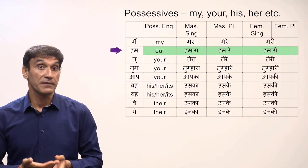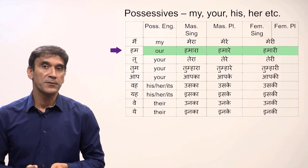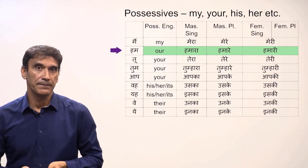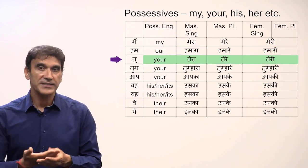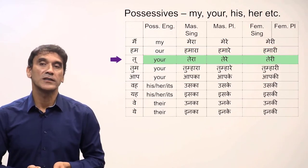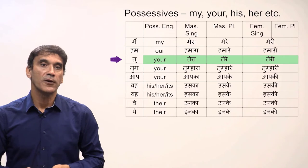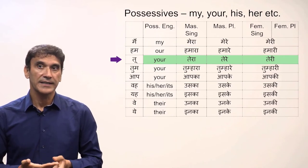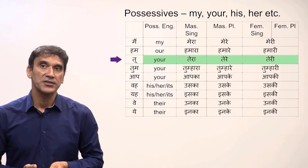For the English possessive 'our', the Hindi forms are hamara, hamare, hamari. For the second person singular tu, the forms are tera, tere, teri. The English translation is 'your'.